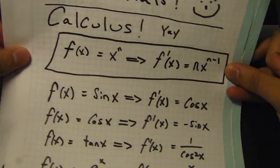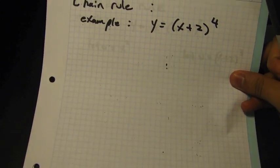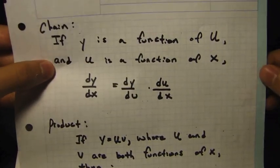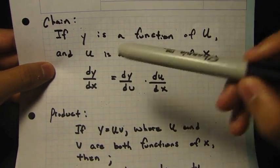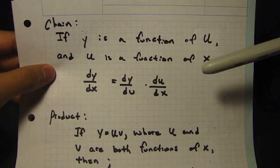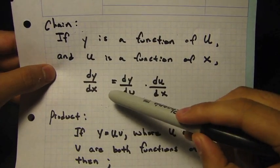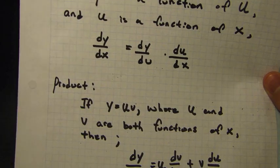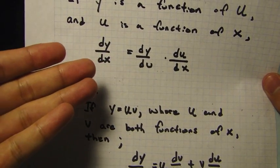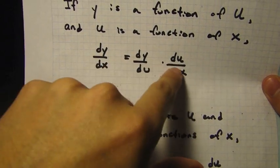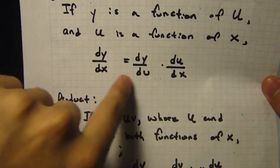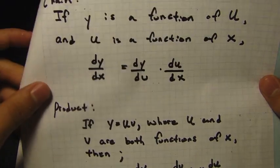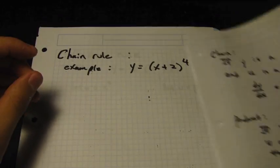So let's start with the chain rule. What is the chain rule? If y is a function of u and u is a function of x, then dy/dx equals dy/du times du/dx. I'll be doing an example right now in case you don't remember how to use this formula — don't worry, I'll go through it step by step.